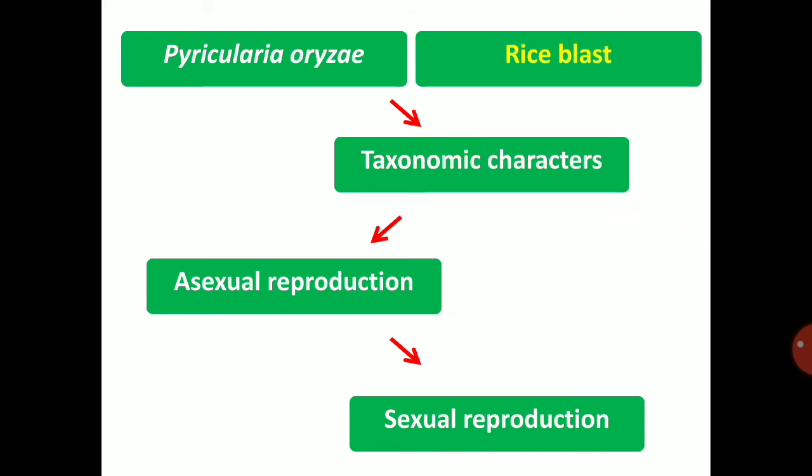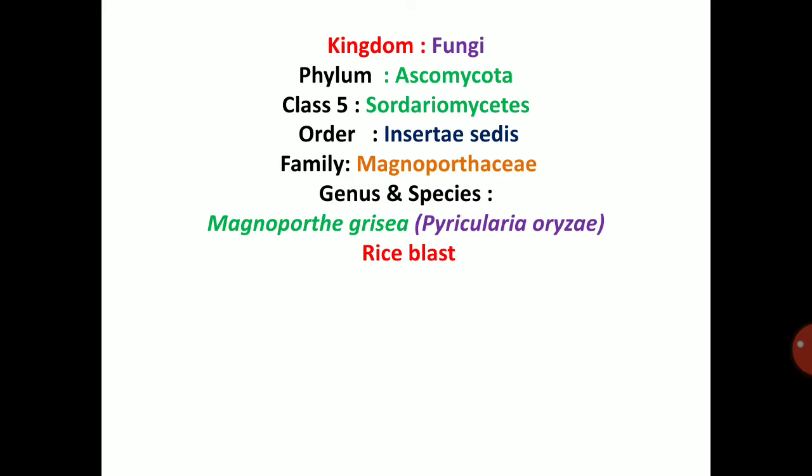Pyricularia oryzae causes rice blast. Pyricularia oryzae comes under kingdom Fungi, phylum Ascomycota, class Sordariomycetes, order Incertae Sedis — meaning the order is not known — family Magnaporthaceae, genus and species Magnaporthe grisea. Magnaporthe grisea is synonymous with Pyricularia oryzae.